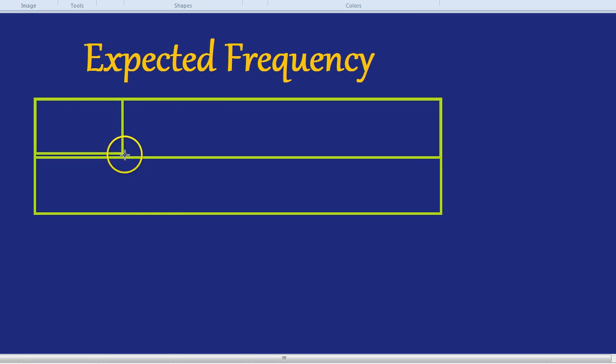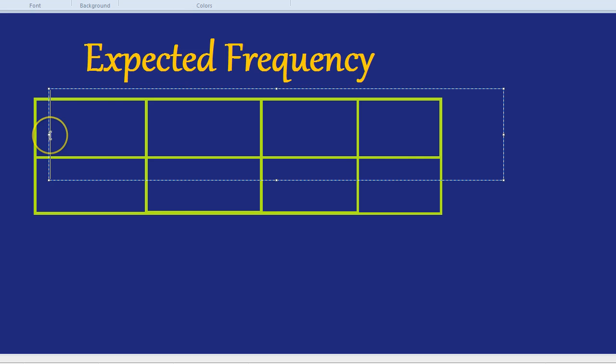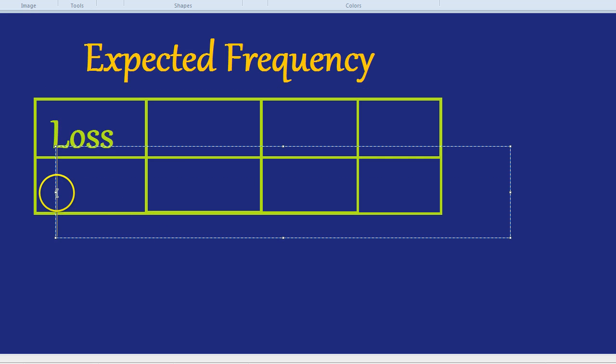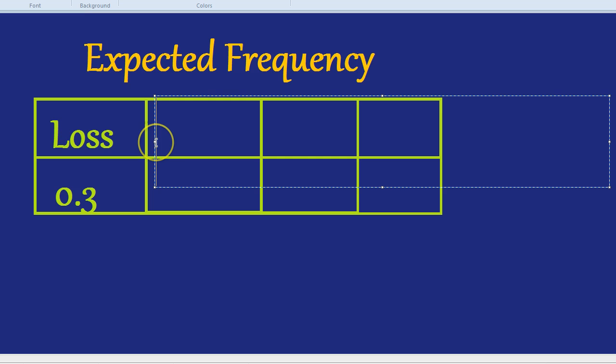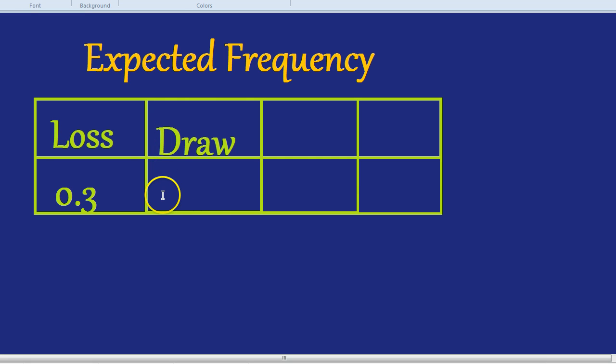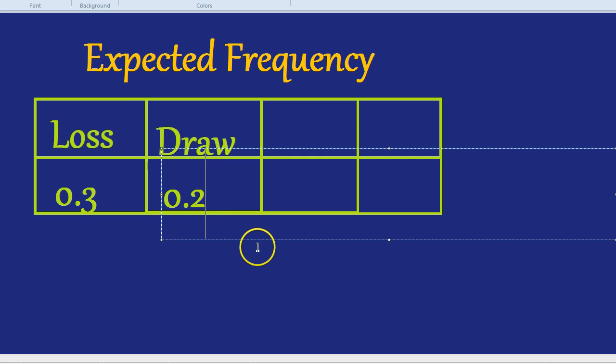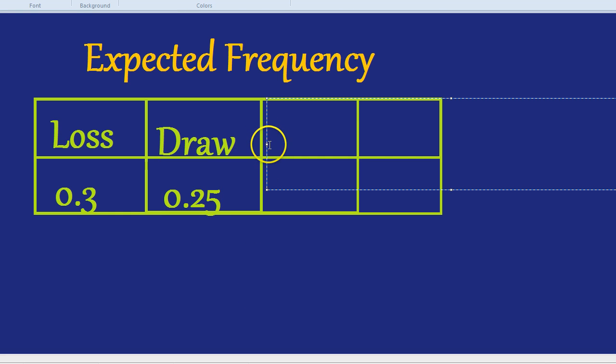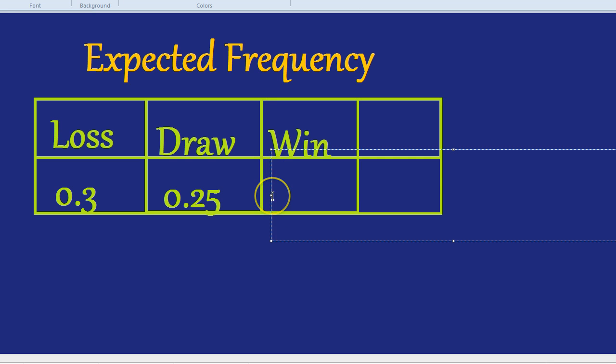Now, in this game, there's four different outcomes. Let's draw four different tables. The chances of you losing to a loss is 0.3. The chances of drawing is 0.25. And you're told the chances of you winning is 0.32.